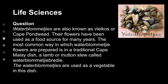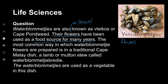The first question is a little bit of a reading piece. We're talking about waterblommetjies — the word is 'vlakos' or, in English, it's called the pondweed. These are actually flowers. Their flowers have been used as a food source for many years. The most common way in which waterblommetjie flowers are prepared is as a traditional Cape Malay dish — a lamb or mutton stew called waterblommetjie bredie. The waterblommetjies are used as a vegetable in this dish.